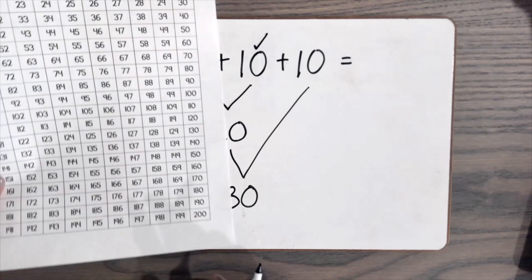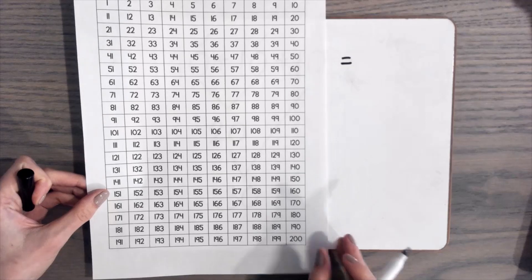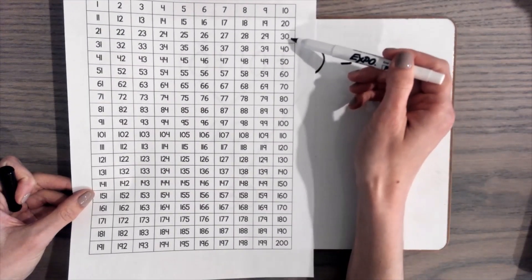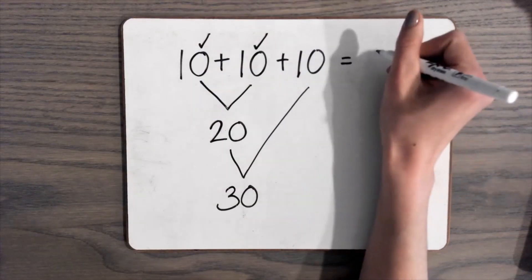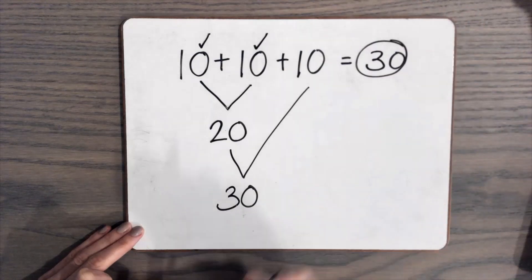You can also check using your 200s chart. So if we have 20, 10 more is 30. It's right below it. So our answer here is 30. Don't forget to circle your answer.